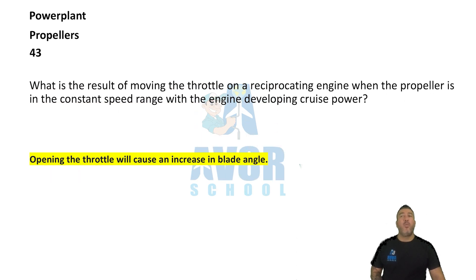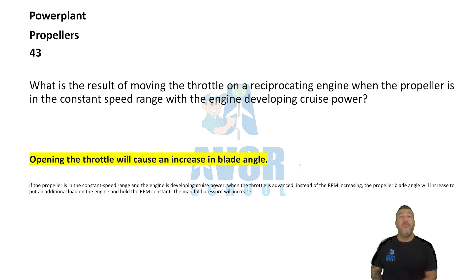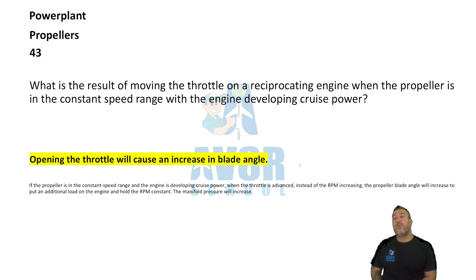Number 43. What is the result of moving the throttle in a reciprocating engine when the propeller is in the constant speed range with the engine developing cruise power? Opening the throttle will cause an increase in blade angle.